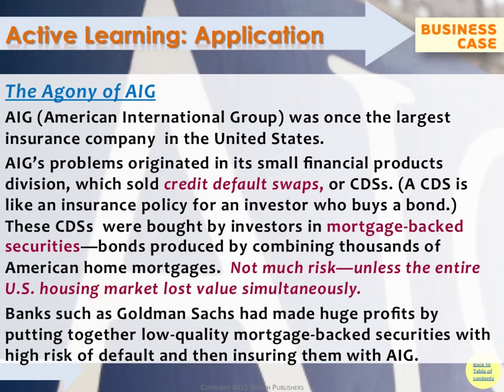Sometimes insurers do not pay attention to the fact that what looks like diversification is not truly diversification, because their so-called independent events are not so independent. For instance, AIG's credit default swaps: if the entire U.S. housing market lost value simultaneously — which had not happened before — the whole thing goes down. Diversifying in mortgages in Alabama versus California only works if increased default risk in California doesn't affect Alabama, but as it turns out, it did.